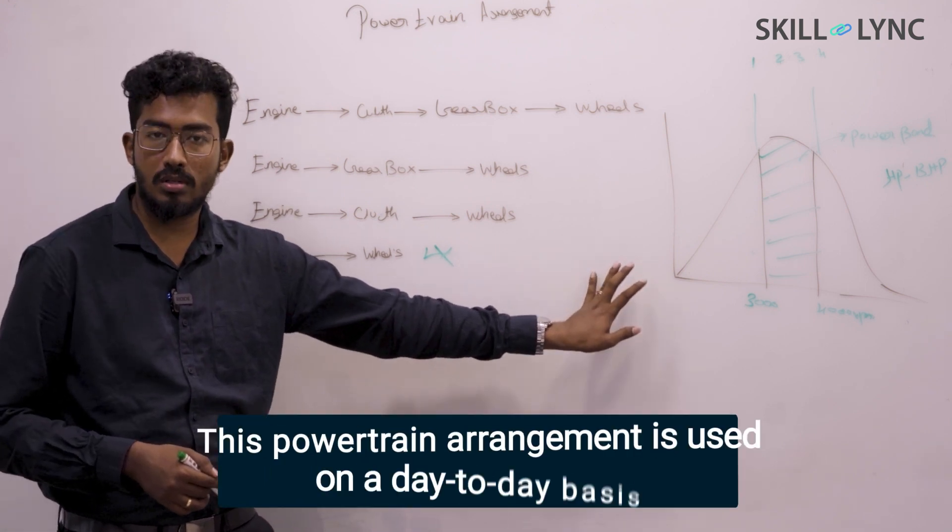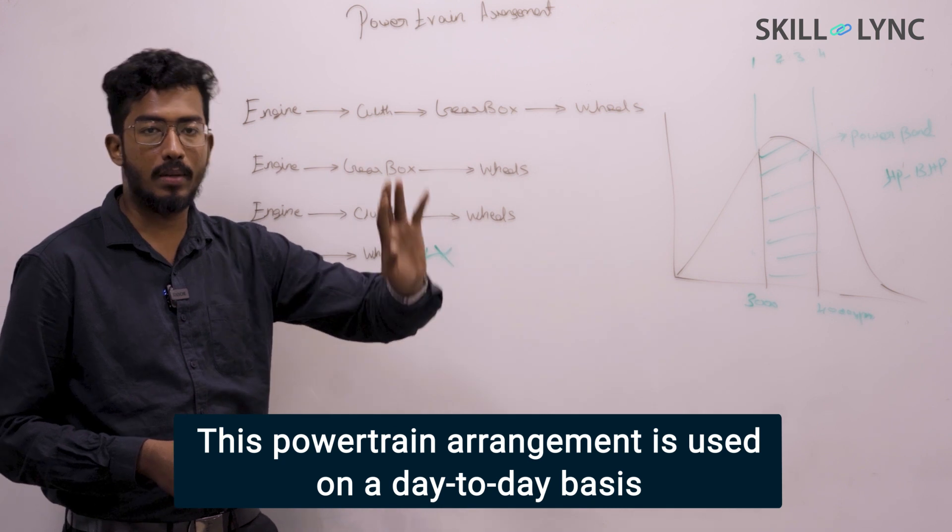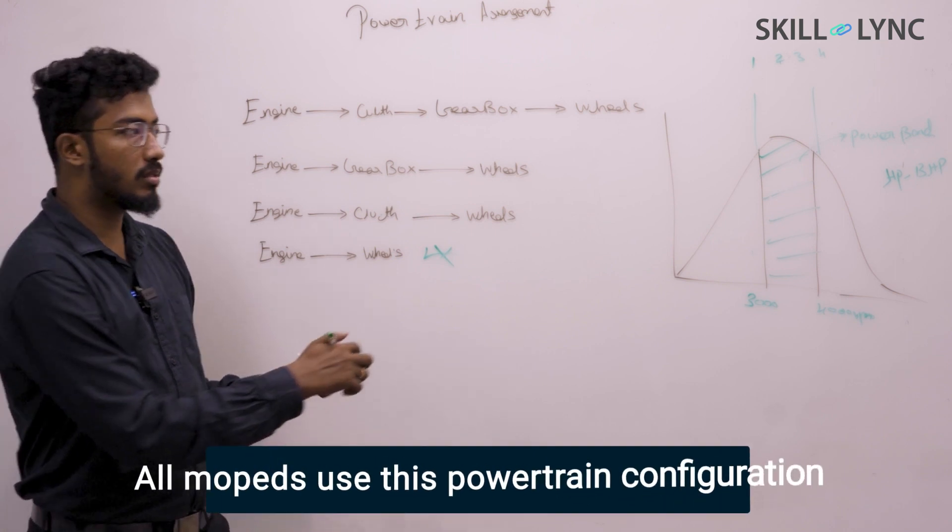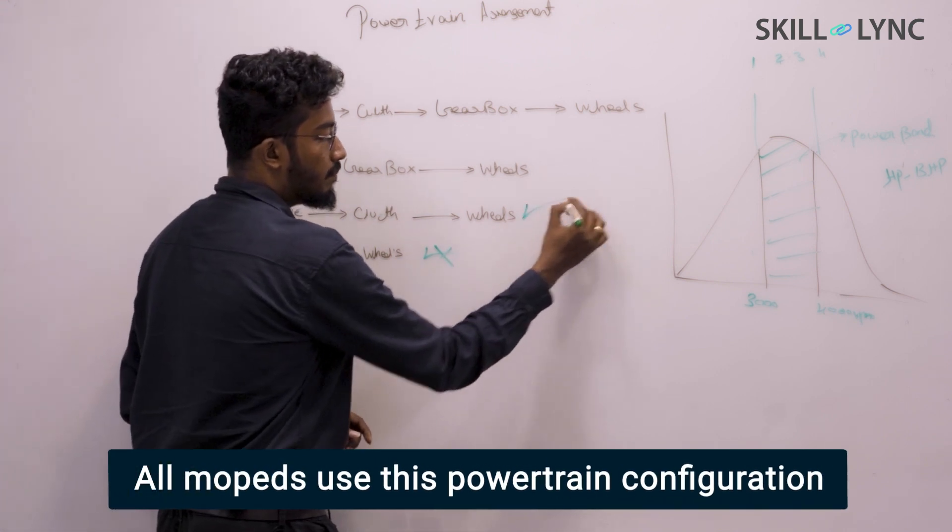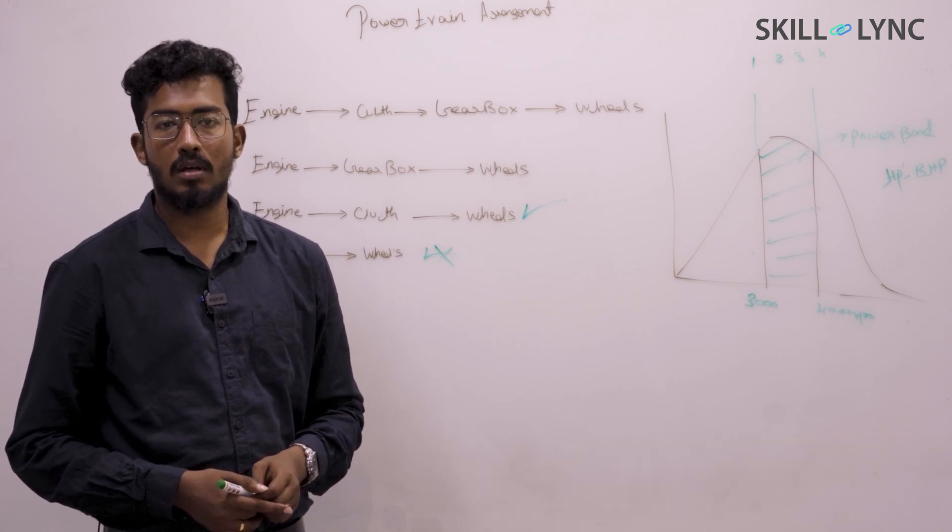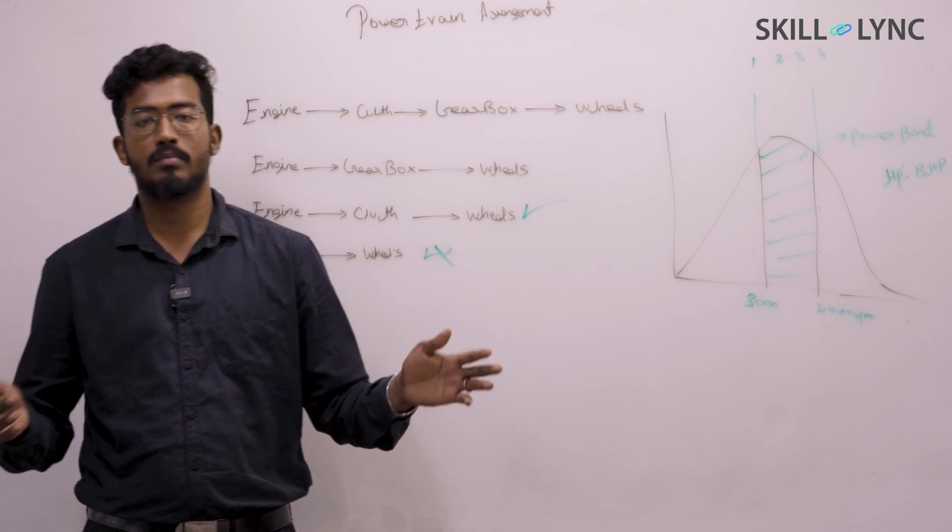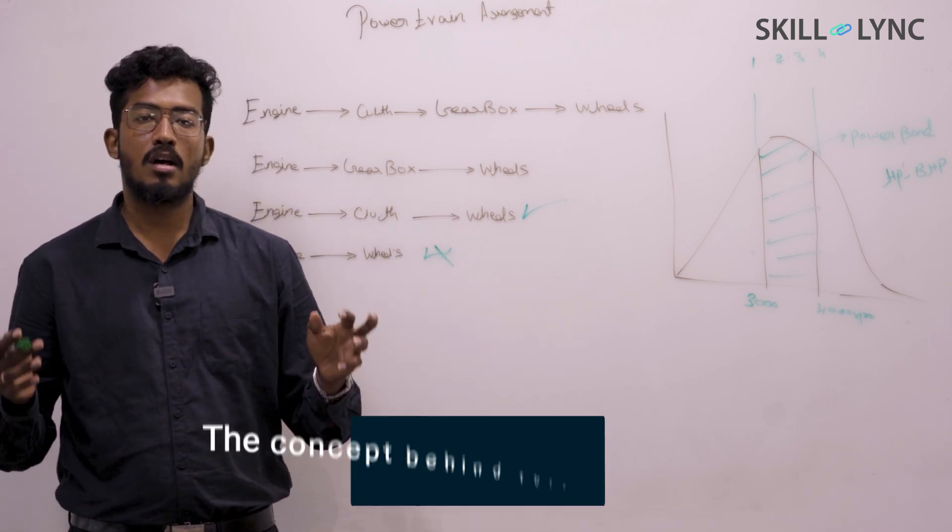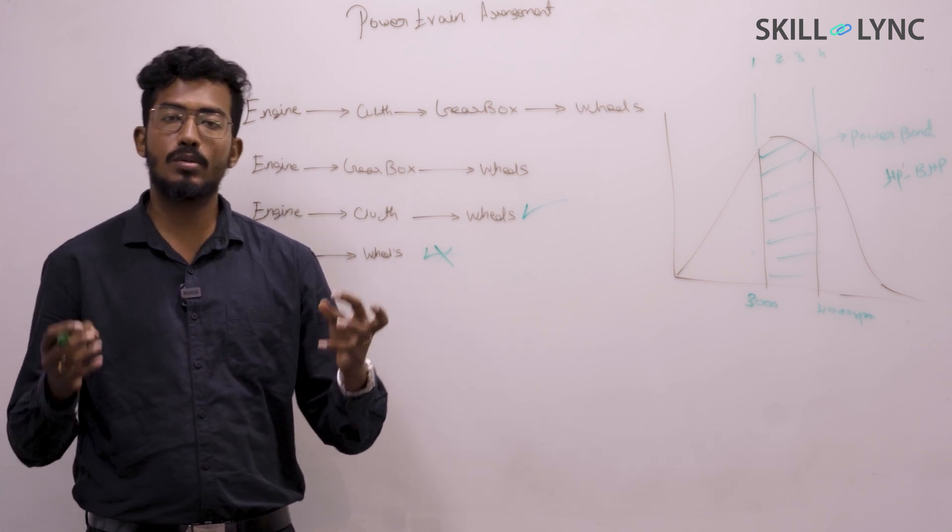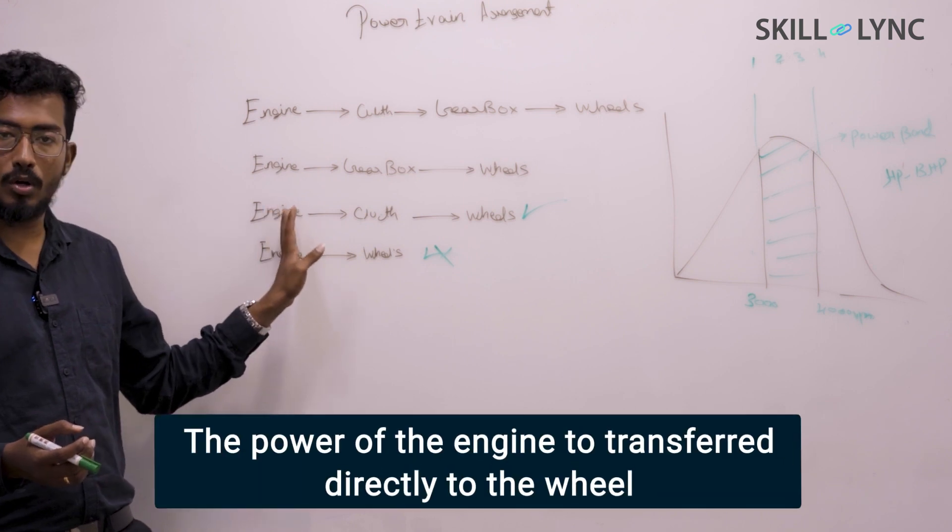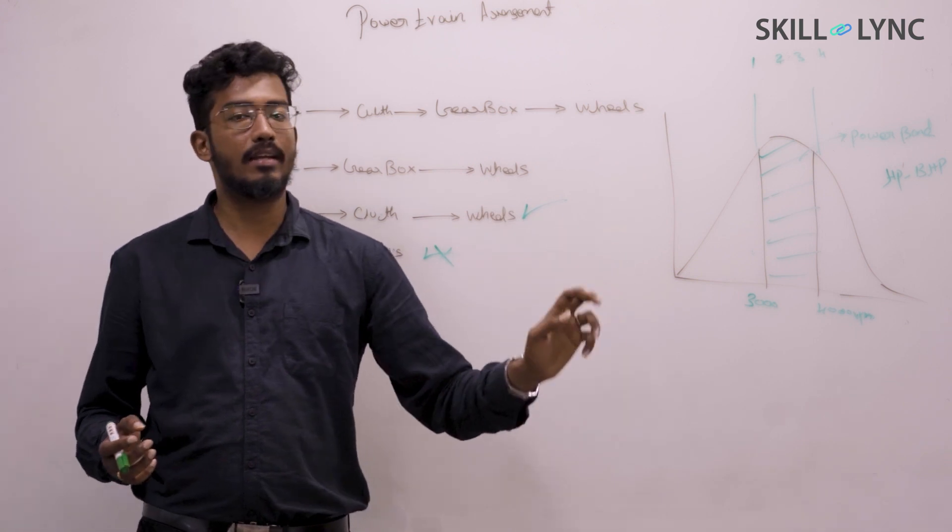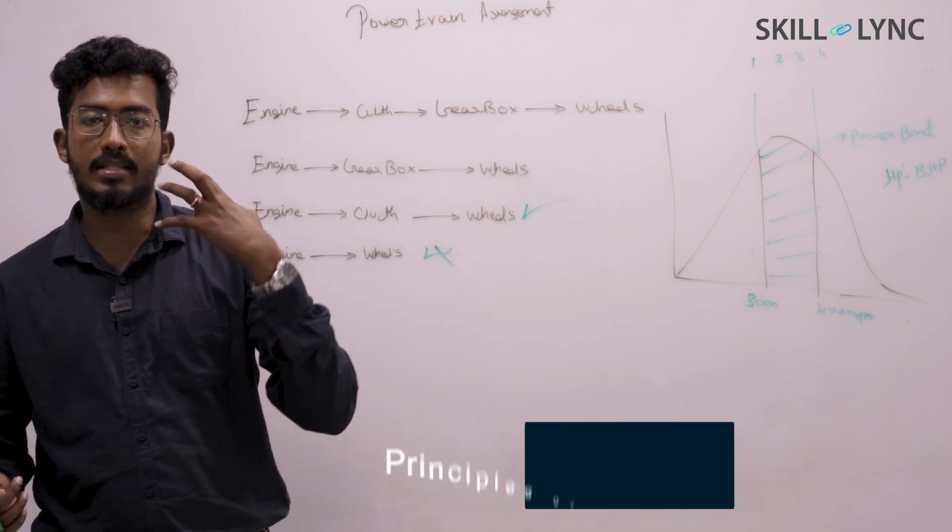This is mostly used on a day-to-day basis such as your scooties and mopeds. They use this method of powertrain configuration. You might have wondered how they're even doing it. Is it automatic transmission or CVT? The very simple answer is centrifugal clutches. All these scooties and mopeds use centrifugal clutch to transmit the engine output directly to the wheels without needing any gearbox in it.